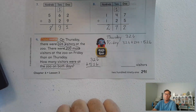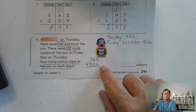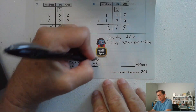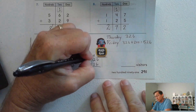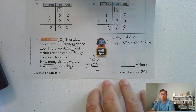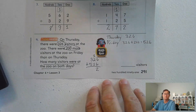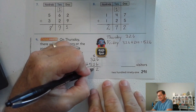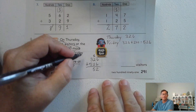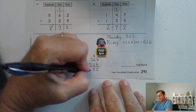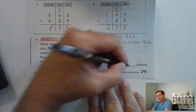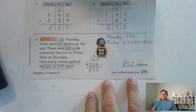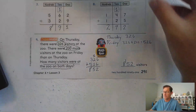Six ones plus six ones is twelve ones — regroup as one ten and two ones. Add the tens: two, four, five tens. 500 plus 300 is 800. So 852 visitors over the two days.